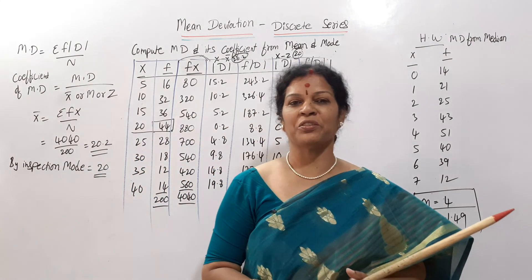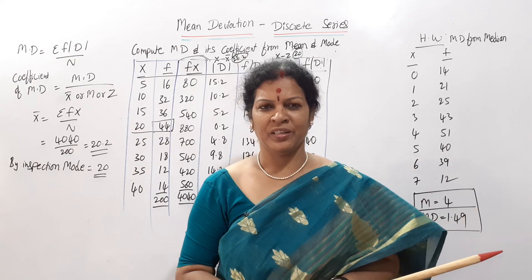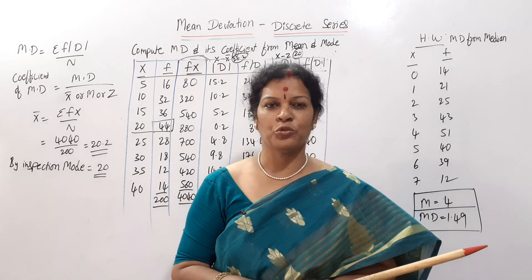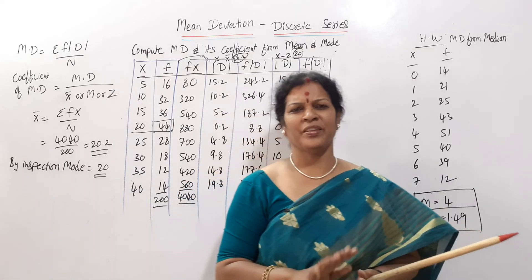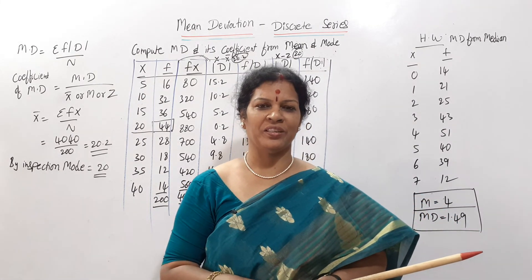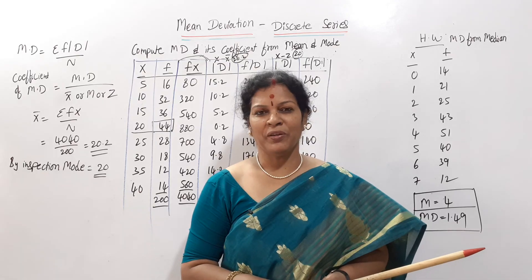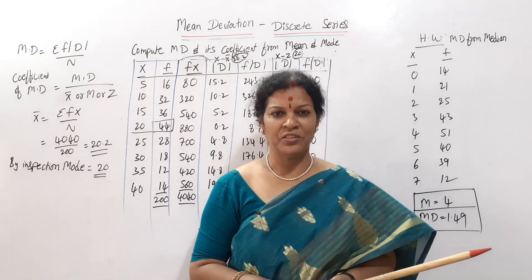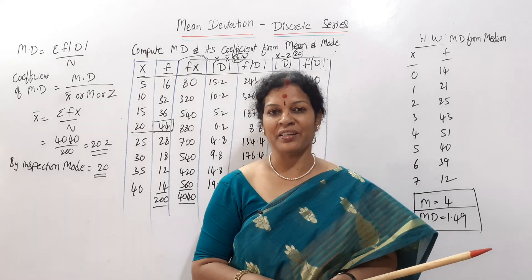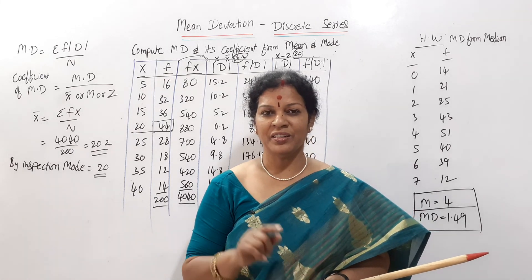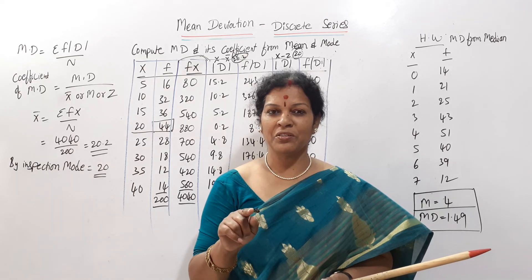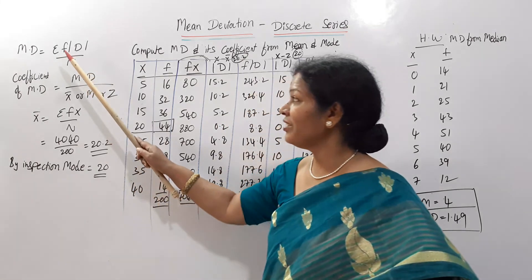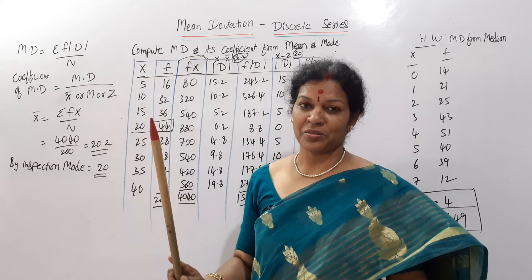Hello dear students, welcome to Devikos Commerce and Management Academy. In the last class we have seen mean deviation in individual series. Today we'll see discrete series. The formula for individual series was: mean deviation = sigma mod d by n. Now for discrete series, mean deviation = sigma f into mod d by n.